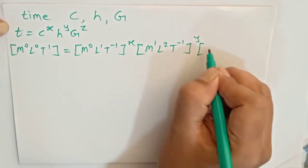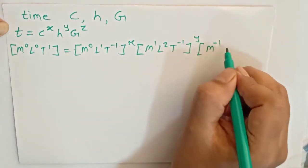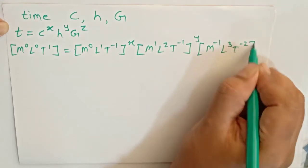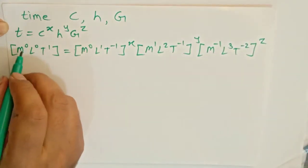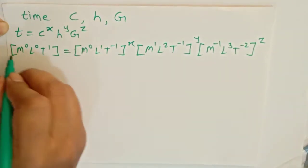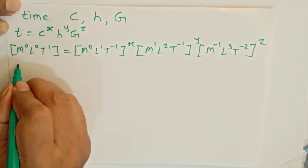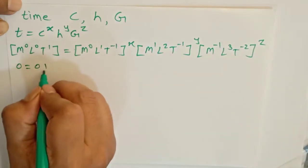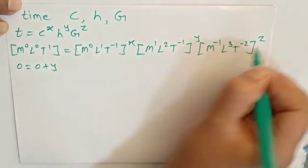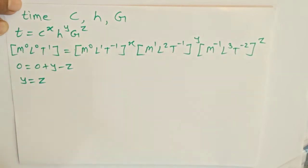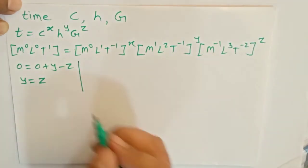We will compare the powers of M, L, and T. Comparing M powers: 0 equals 0 times x, plus 1 times y (which gives y), plus minus 1 times z (which gives minus z). So we can conclude y is equal to z.